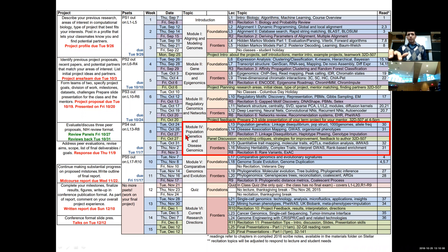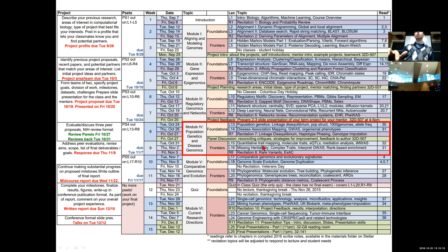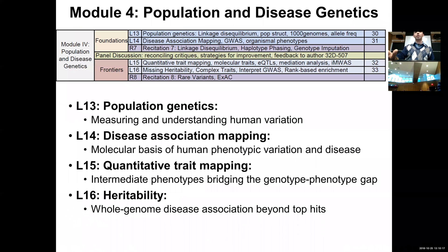Here we are in the second lecture of the population genetics and disease genomics part of the class. Next week we're going to be talking about quantitative traits, specifically focusing on expression quantitative trait loci, and then the following Thursday we're going to be talking about complex traits at the extreme and heritability.